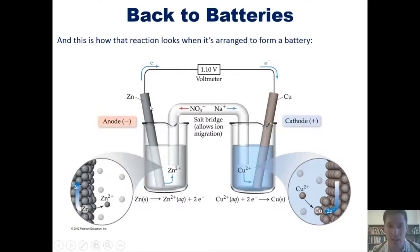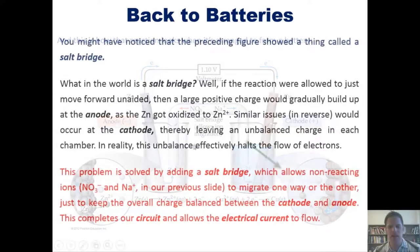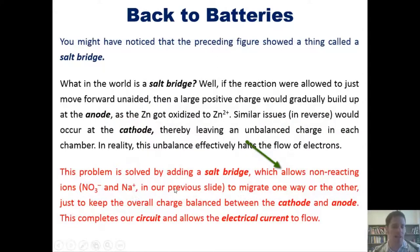The purpose of the salt bridge is to combat this. How? Well, a salt bridge allows non-reacting ions—nitrate and sodium in this particular case—to migrate one way or the other, whichever way is needed, just to keep the overall charge balanced between the cathode and the anode. This completes our circuit and allows electrical current to flow.